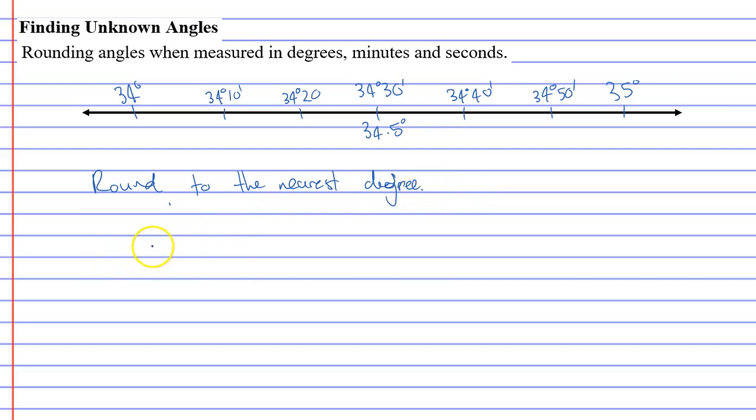They might say okay well if you've got 34 degrees 20 minutes what is that to the nearest degree. Well 34 degrees 20 minutes is closer to 34 degrees than 35. So we would say well that's approximately 34 degrees when rounded to the nearest degree.